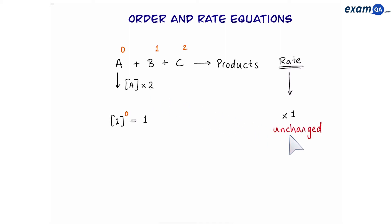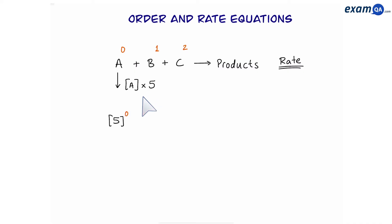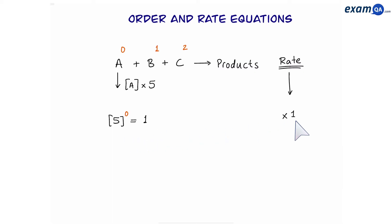The speed was unchanged. What about if we times A by five? We're going to do five to the power of zero, because it's zero order. That gives us one. Again, the rate will be unchanged. So a reactant that has zero order will never have any influence on the rate of reaction if you change its concentration.